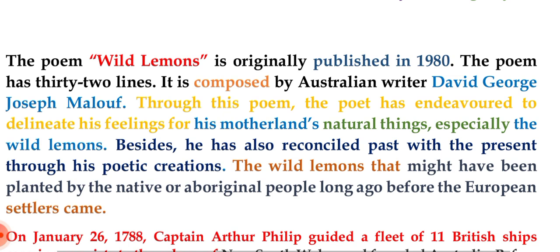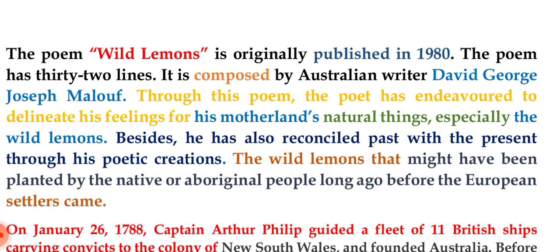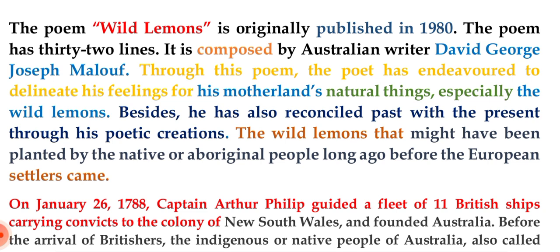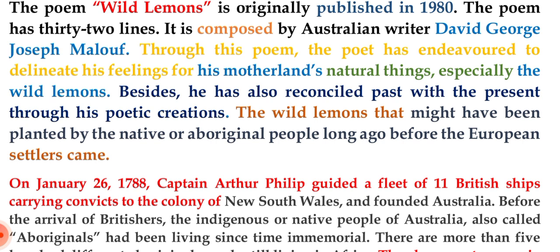On January 26, 1788, Captain Arthur Phillip guided a fleet of 11 British ships carrying convicts to the colony of New South Wales and founded Australia. Before the arrival of British colonizers, this place was known as New South Wales by outsiders. Before the British arrived, the indigenous or native people of Australia — also called Aboriginals — had been living in the Australian continent since time immemorial.